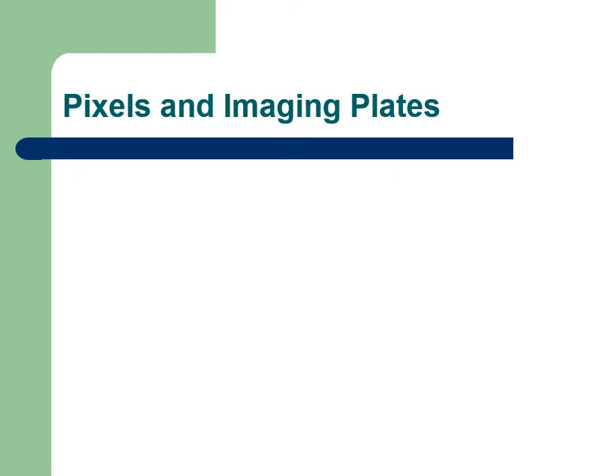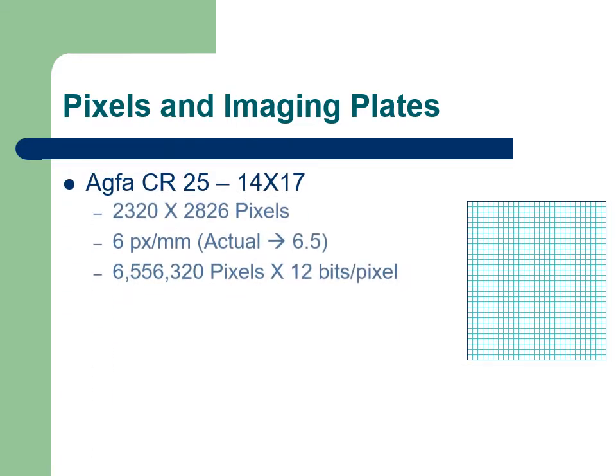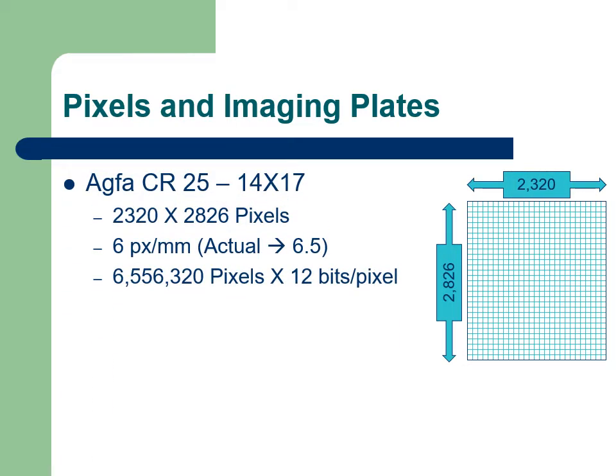While the display screen is made up of pixels, the radiographic imaging plate is also made of pixels. A common CR plate is scanned by laser dots defining the pixel size. The size of the dot can be controlled by software. A 14 by 17 plate is scanned at a rate of about 6 pixels per millimeter, for a total of 6,556,320 pixels on a 14 by 17 image.